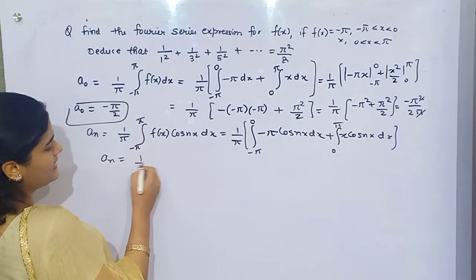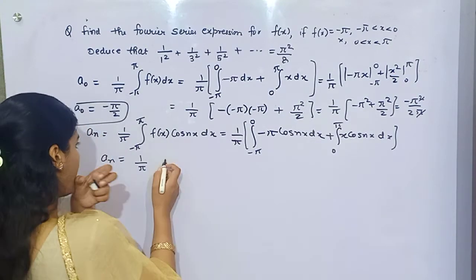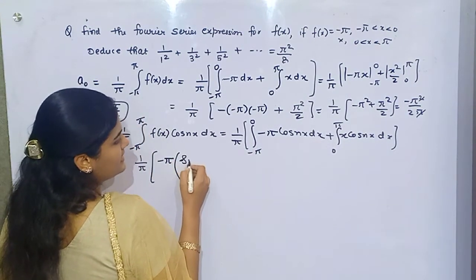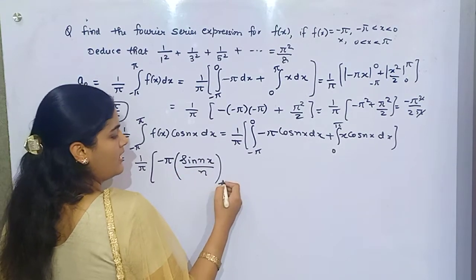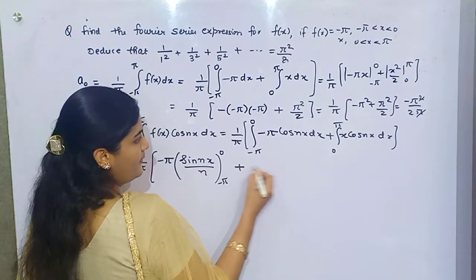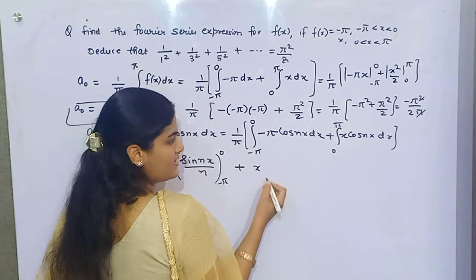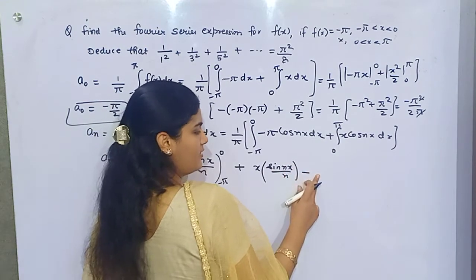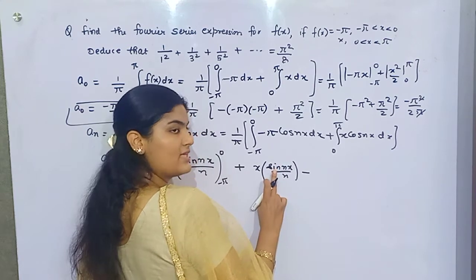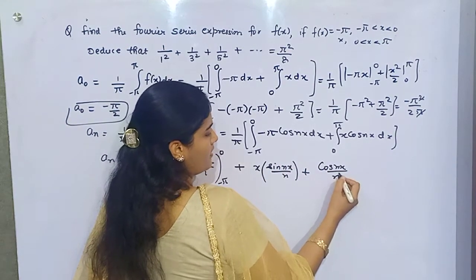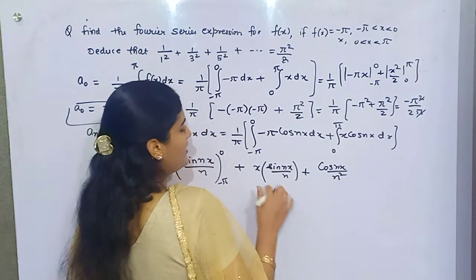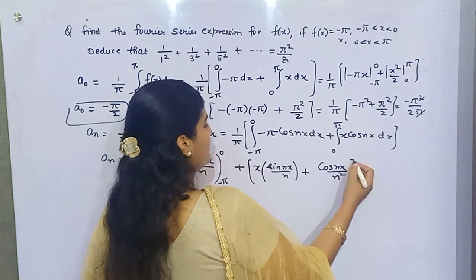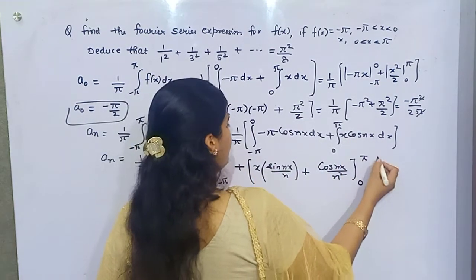Solving this expression: for the first part, the integral of cos(nx) is sin(nx)/n, with limit from minus pi to 0. For the second part, applying integration by parts — first function as is times integration of the second, minus derivative of the first (which is 1) times integration of sin(nx), which is minus cos(nx)/n — divided by n, giving cos(nx)/n², with limit from 0 to pi.